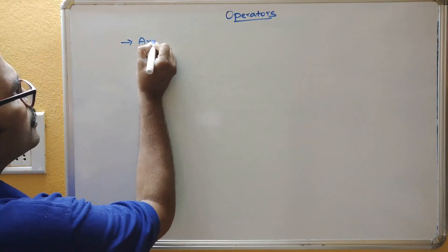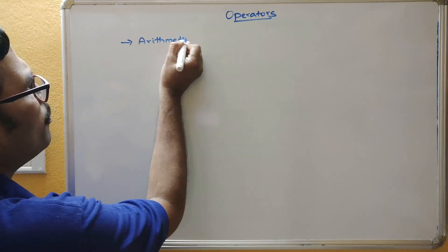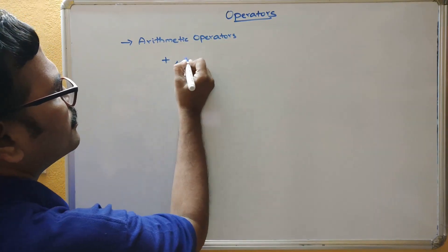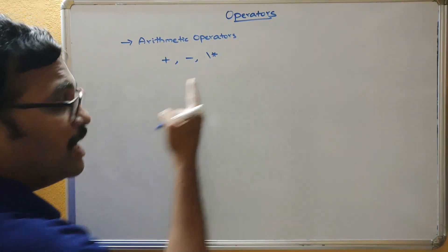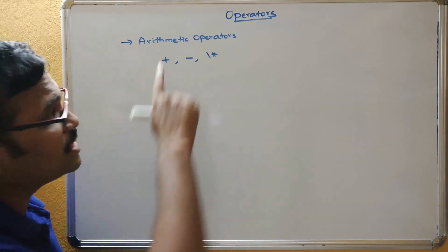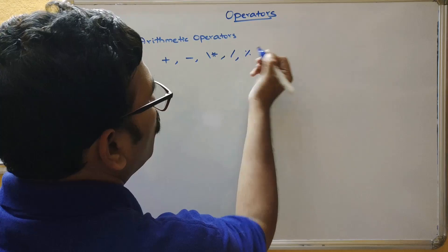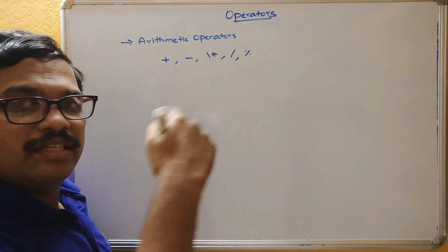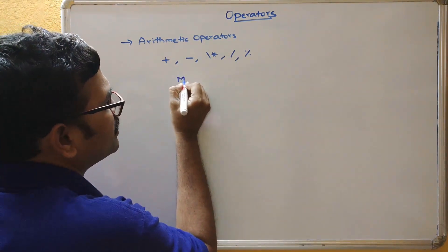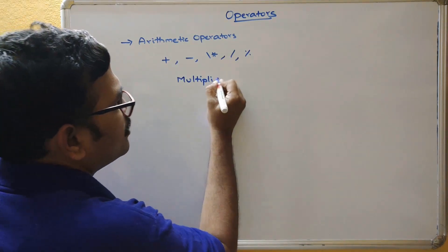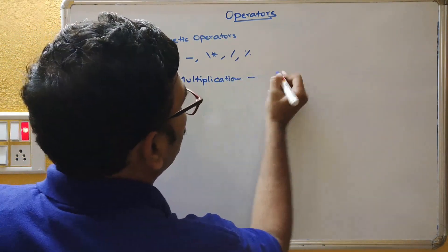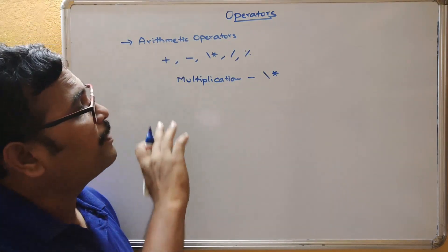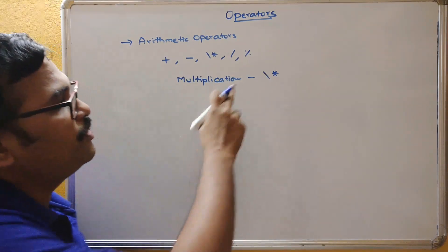Coming to the first one — arithmetic operators. Arithmetic operators are addition, subtraction, star (that is multiplication), and division. The multiplication is represented using backslash and star. If you simply give star, it doesn't perform the multiplication — you need to use the backslash-star combination. Other operators include modulo.